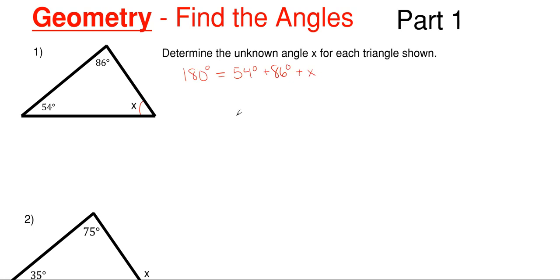So we can just rearrange and solve for x here, which is just going to be 180 degrees minus 54 degrees minus 86 degrees. This gives us a total missing angle of 40 degrees for that x. Just keep in mind that a triangle will always have 180 degrees total inside of it. Any three-sided shape will always have 180 degrees.